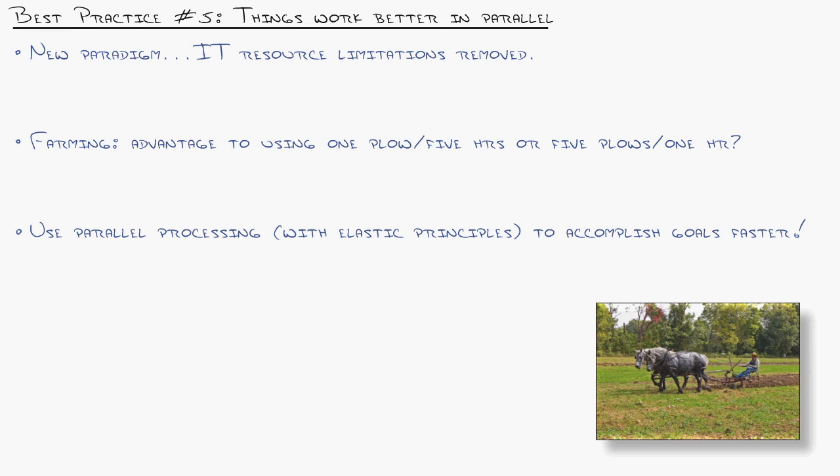Now, free your mind to think with this new IT paradigm of unlimited resources. Think about farming. What's the advantage to using one plow for five hours versus five plows for one hour to plow a field? Well, the advantage is you don't have to buy a whole bunch of plows, right? Well, AWS has changed that whole paradigm where they're saying you can have as many plows as you want and you pay per hour that they're used.